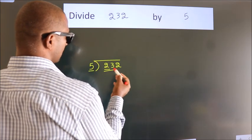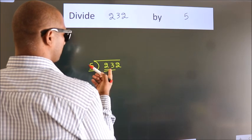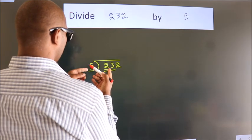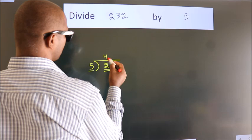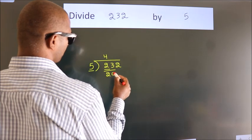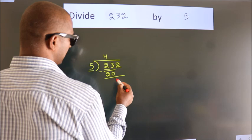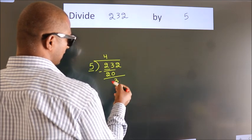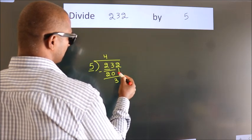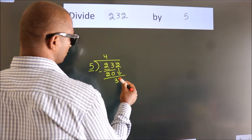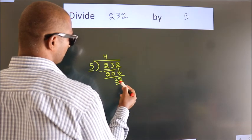A number close to 23 in the 5 table is 5 fours, 20. Now we should subtract, we get 3. After this, bring down the beside number, so 2 down, so 32.